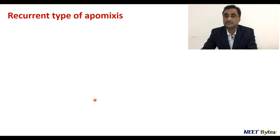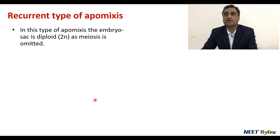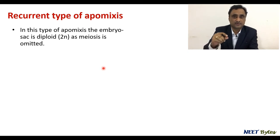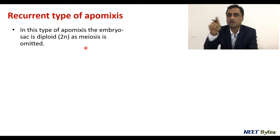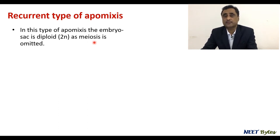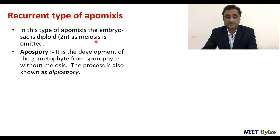Now let's talk about the recurrent type of apomixis. In the recurrent type, the structure is diploid and will further participate in the cycle — it will undergo meiosis, form gametes, unite, and all those cycles continue. However, since we are talking about apomixis, nuclear fusion and nuclear changes are absent. In the recurrent type, meiosis is missing — meiosis is omitted.